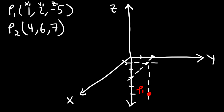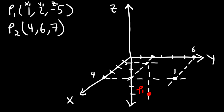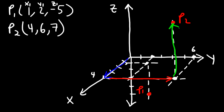Now let's plot the second point where x is 4 and y is 6. Here's 6 on the y axis and 4 on the x axis. Starting with the point on the x axis, we draw a dashed line parallel to the y axis, and starting with the point on the y axis, a line parallel to the x axis. We highlight that point of intersection, then draw a dashed line parallel to the z axis going up 7 units. We traveled 4 units along the x axis, 6 units along the y axis, and approximately 7 units parallel to the z axis.